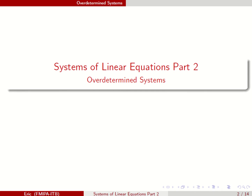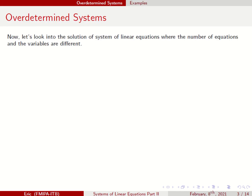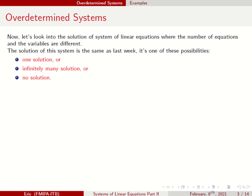Let's look at the over-determined system first. What does over-determined system mean? We will look into a solution of a System of Linear Equations where the number of equations and the variables are different. The solution of this system is the same as last week — there are three possibilities: one solution, infinitely many solutions, and no solution.